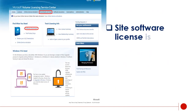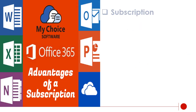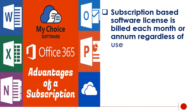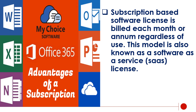Site software license is a method to obtain multiple end user licenses at one cost. Subscription-based software license is billed each month or annually regardless of use. This model is also known as a software as a service (SaaS) license. Subscription-based per user licenses generally include the license, technical support, software maintenance, and hosting of the software.